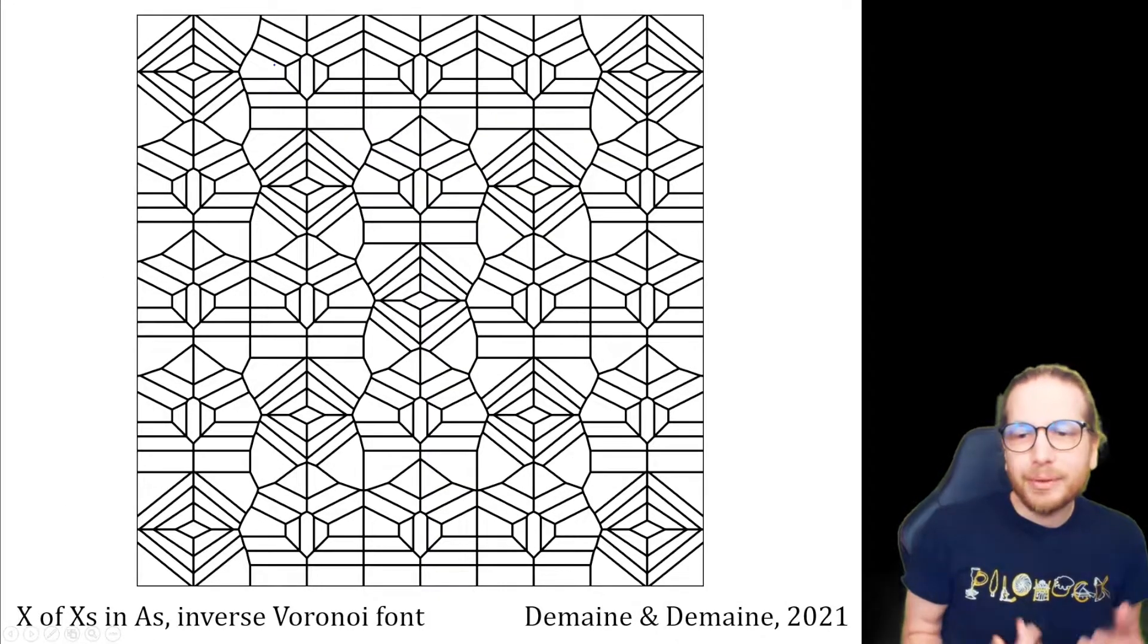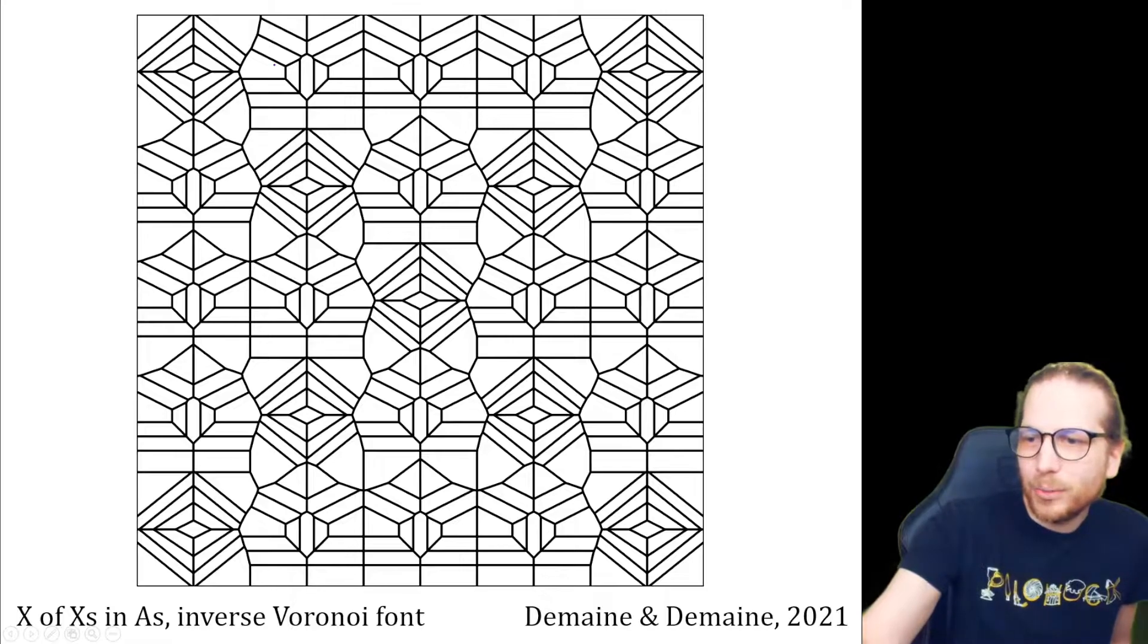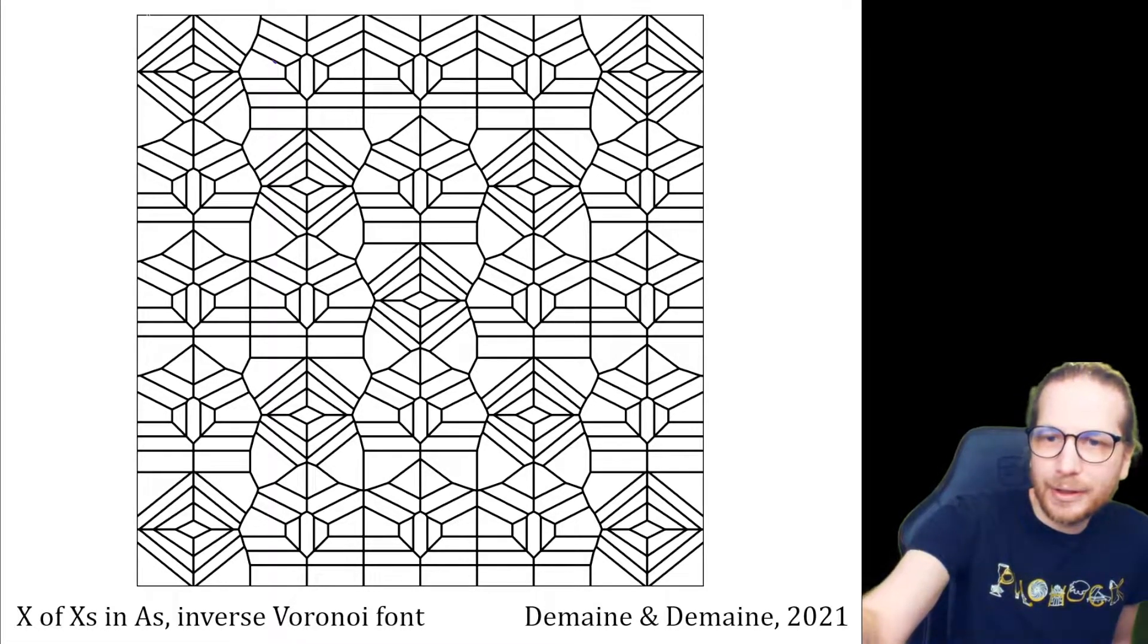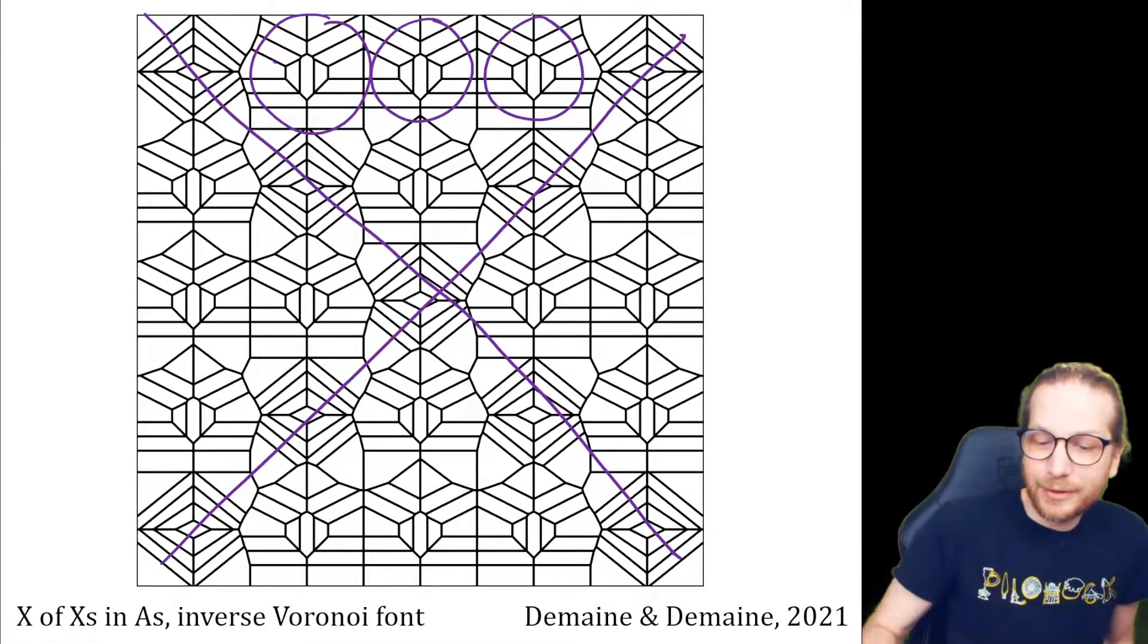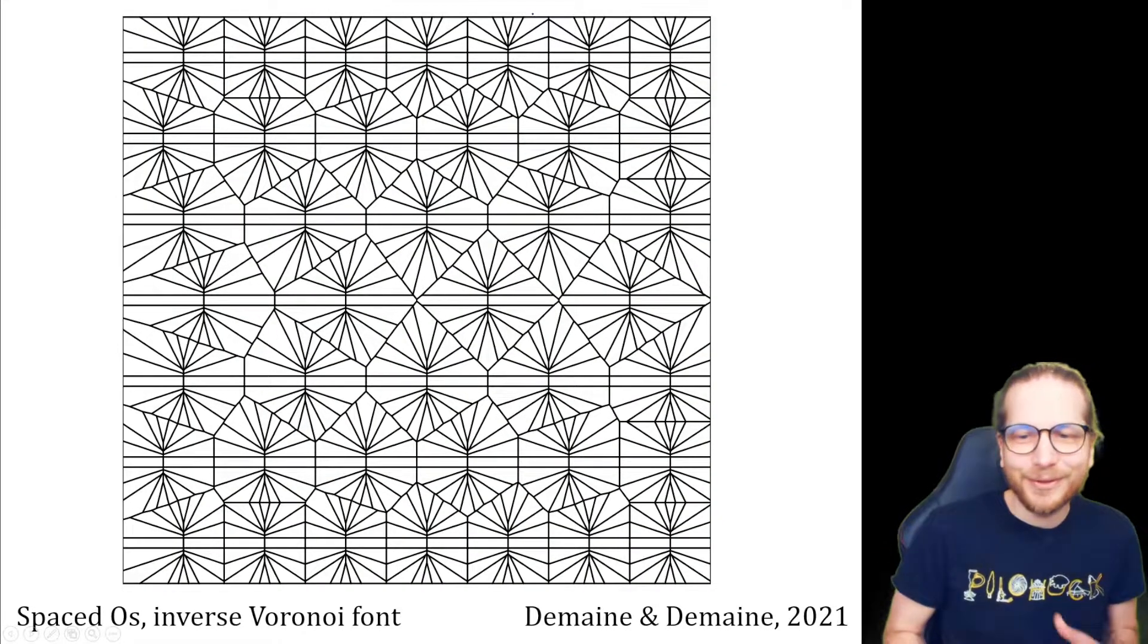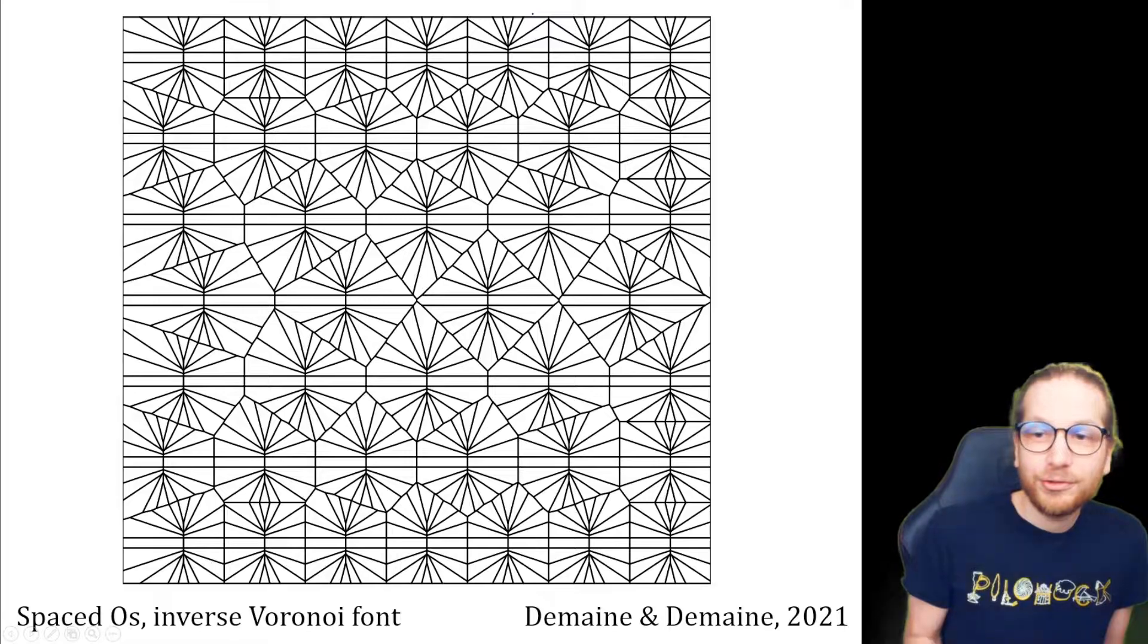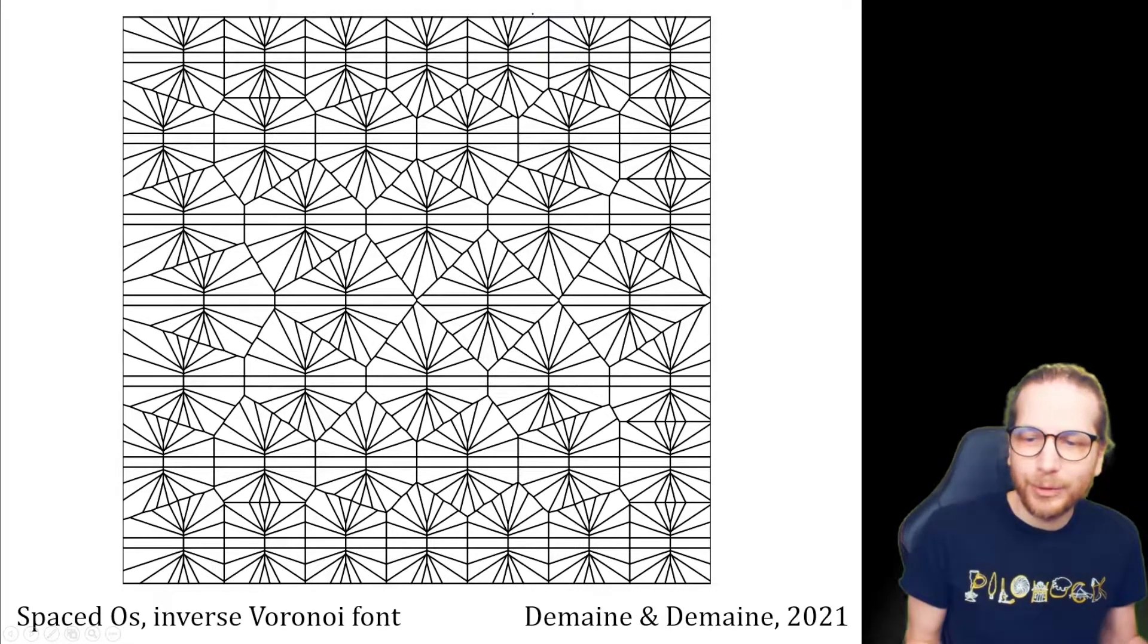Or you can make irregular patterns, too. So this is a nice kind of centrally symmetric pattern where we have a big X here where we've written the letter X, and all of the other letters in between are the letter A. And so you can just throw random text in here and get interesting patterns. This is just the letter O, but spaced out in a somewhat random way to get some nice interactions between the different Voronoi diagrams.